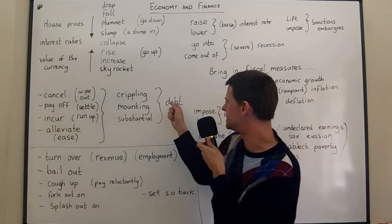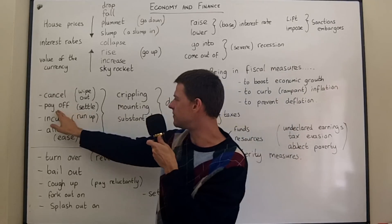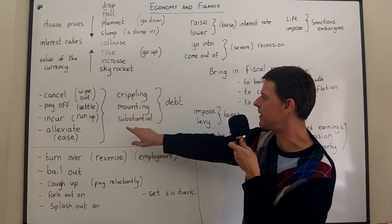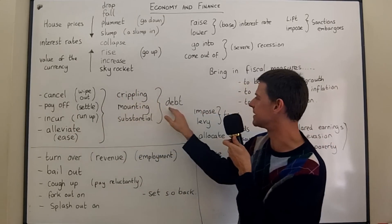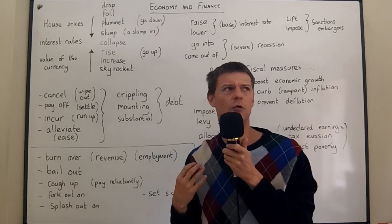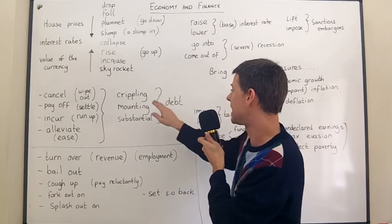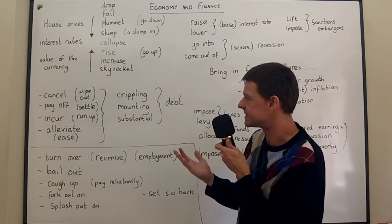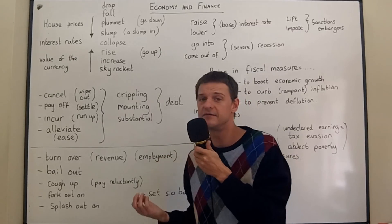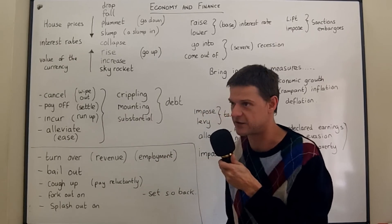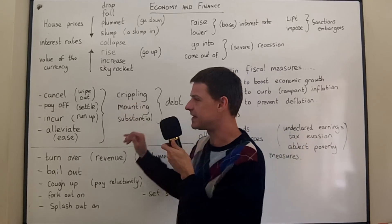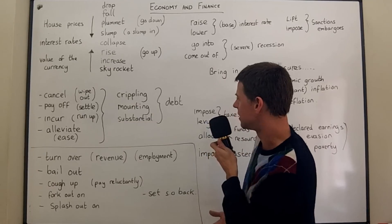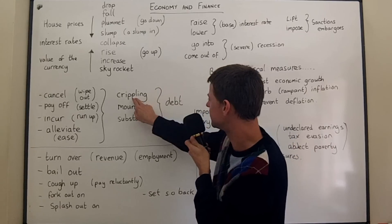Coming on to the word debt. You can cancel your debts, pay off your debts, incur debts, and alleviate debts. These adjectives describe types of debt: you can incur crippling debts. Crippling means terrible, awful debts — so bad they cripple you. A cripple was an old word for someone disabled or invalid. Crippling debt means you're unable to function; it's incapacitating debt that stops you from functioning normally. So that's a very severe form of debt — severe debt, crippling debt.